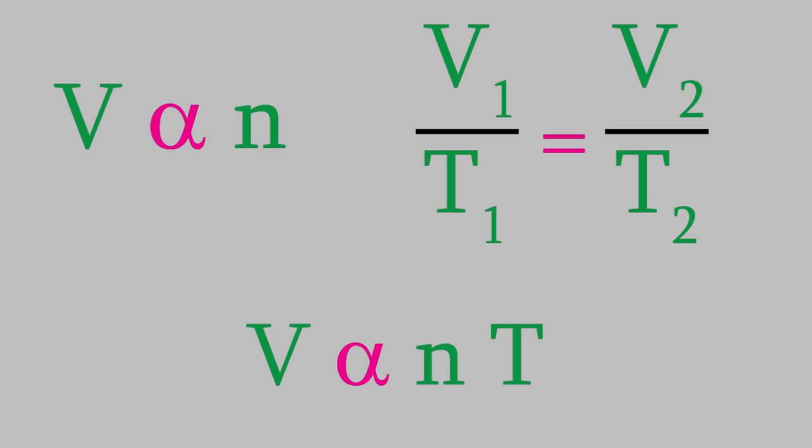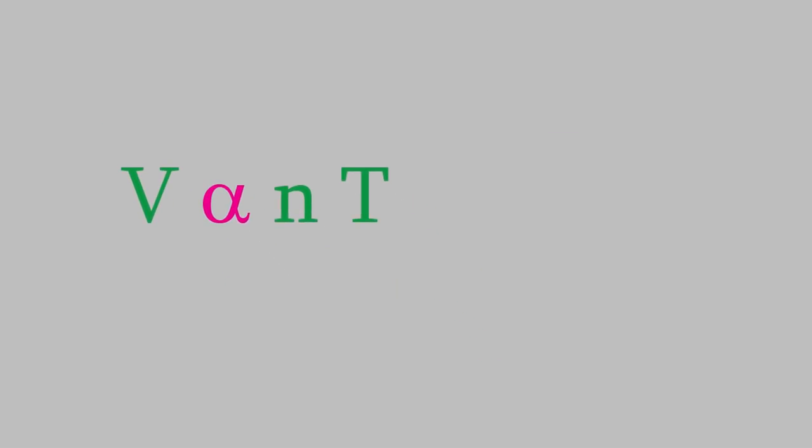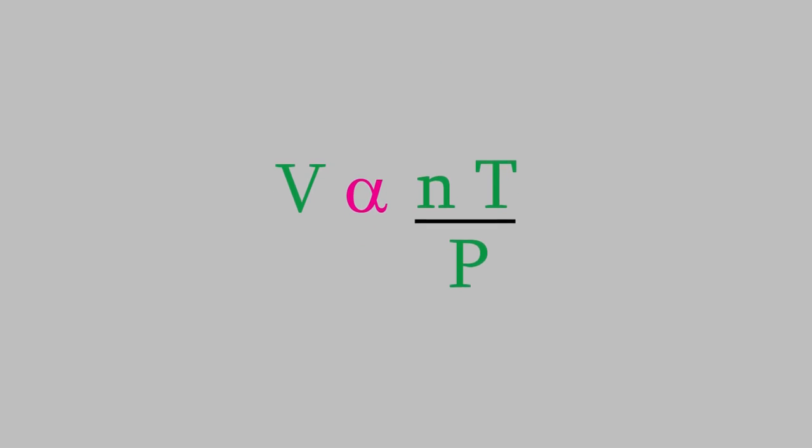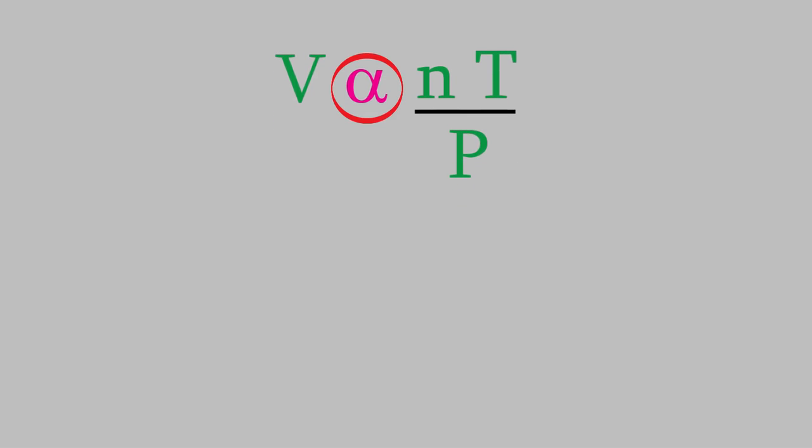In 1834, the French physicist Émile Claperon noticed that all three of these relationships involve volume, so he combined them all into one equation. Here's how. First, notice that the volume is proportional to the number of moles. Next, Charles's law tells us that the volume is also proportional to the temperature. So the volume is proportional to N times T. Boyle's law tells us that the volume is inversely proportional to the pressure. So V will be proportional to N times T divided by P, the pressure.